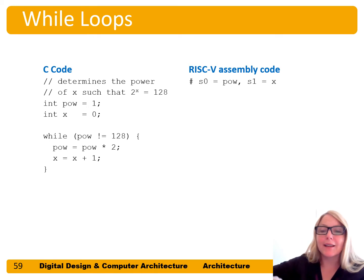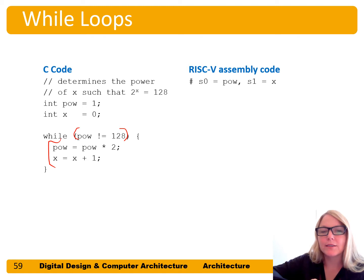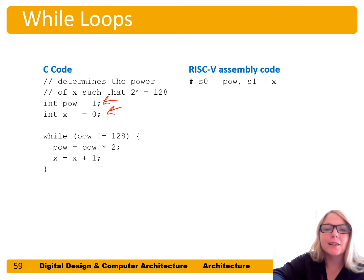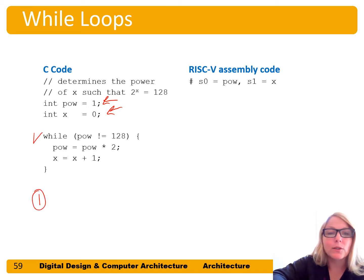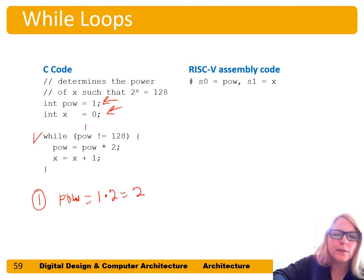While loops repeatedly execute a block of code until a condition is not met. Here's some high-level code that determines the power of x such that x equals 128. We initialize power equals 1 and x equals 0. First iteration: power is 1, not equal to 128, so power equals 1 times 2 equals 2, and x equals x plus 1, so x becomes 1.